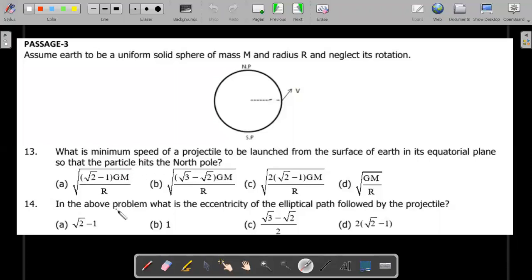And in the above problem, that is when the condition of minimum speed is achieved, what is the eccentricity of the elliptical path followed by the projectile? So these are the two questions. In case you are new and you want to have a try, just pause the video, try it out for eight to 10 minutes and then come back for the explanation of the solution.